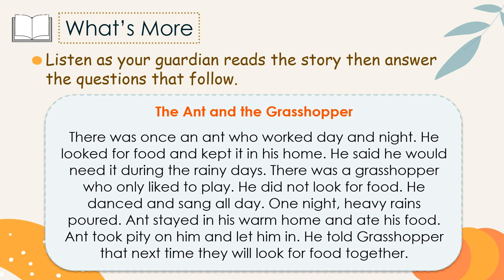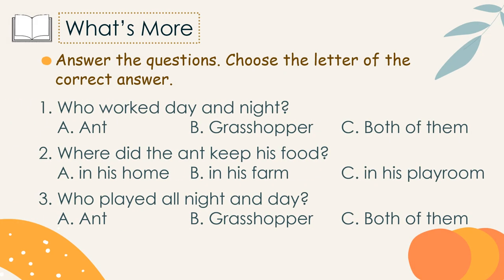The ant took pity on the grasshopper and let him in. He told the grasshopper that next time they would look for food together. Answer the questions. Who worked day and night — the ant, the grasshopper, or both? Good job, it's only the ant. Where did the ant keep his food — in his home, his farm, or his playroom? In his home. Who played all day — the ant, the grasshopper, or both? Good job, it's only the grasshopper.